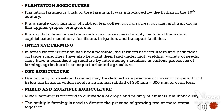Plantation agriculture: Plantation farming is bush or tree farming. It was introduced by the British in the 19th century. It is a single-crop farming of rubber, tea, coffee, cocoa, spices, coconut, and fruit crops like apples, grapes, oranges, etc. It is capital-intensive and demands good managerial ability, technical know-how, sophisticated machinery, fertilizers, irrigation, and transport facilities.